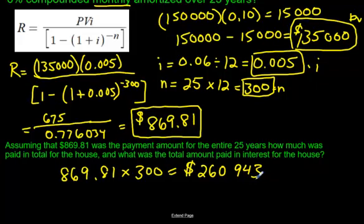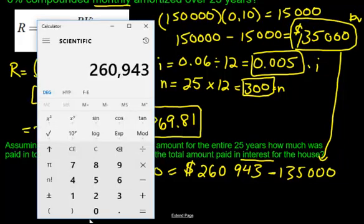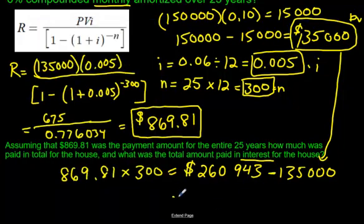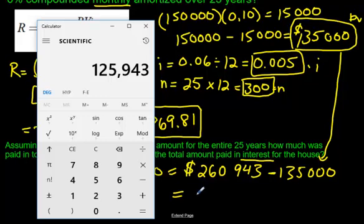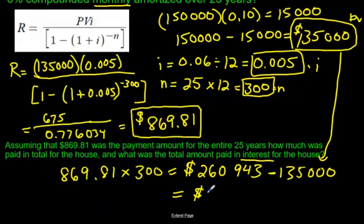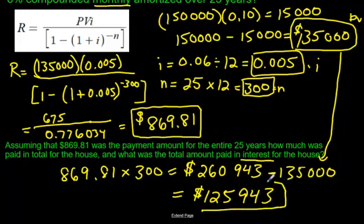How much did you pay in interest for the house? Well, you take this number and minus how much you actually just borrowed for that house. How much did you actually borrow? You borrowed $135,000. So you're taking this number here and you're going to subtract $135,000. And this is how much interest the house cost you. $125,943. That's how much money you paid in interest.